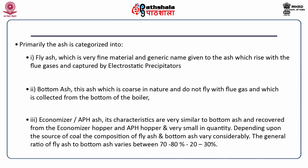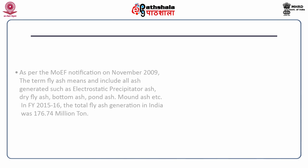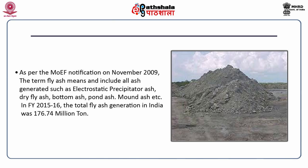Depending on the source of coal, the composition of fly ash and bottom ash varies considerably. The general ratio of fly ash to bottom ash varies between 70–80 percent to 20–30 percent. As per the Ministry of Environment, Forest and Climate Change notification of November 2009, the term 'fly ash' includes all ash generated — electrostatic precipitator ash, dry fly ash, bottom ash, pond ash, mound ash, etc. In financial year 2015-16, total fly ash generation in India was about 176.74 million tons.